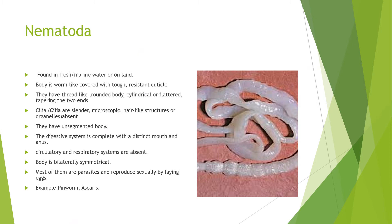Next, Nematoda. They are found in freshwater, marine water, and on land. The body is worm-like and covered with a tough, resistant cuticle. They have a round structure with tapering at the ends. Cilia — slender microscopic hair-like structures — are absent. They have an unsegmented body and a complete digestive system with a distinct mouth and anus. Circulatory and respiratory systems are absent. The body is bilaterally symmetrical and most are parasites. They reproduce sexually by laying eggs. Examples are pinworms and Ascaris.